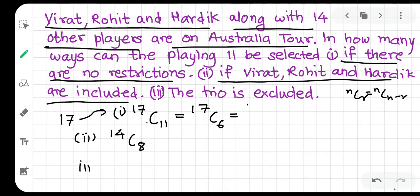For the third question: if the trio — Virat, Rohit, and Hardik — are excluded, then we must select all 11 from the remaining 14 players. That gives us 14C11 as the answer. This is how we solve problems when particular things must be included or excluded from a selection. I hope this single problem is sufficient to understand the concept. Thank you.